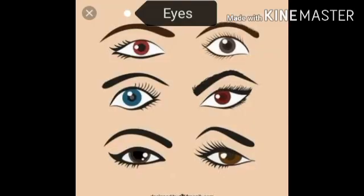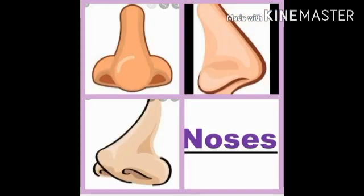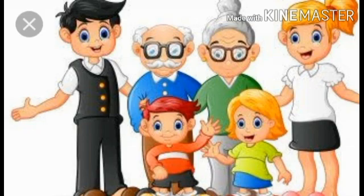Eyes: eyes have different shapes, colors, and sizes. Nose: just as our eyes differ, our noses may vary too. Sometimes, like any other feature, we may inherit the same shape or length of our nose from a parent or a relative. So we can say that our physical features are sometimes similar and sometimes unique and dissimilar.